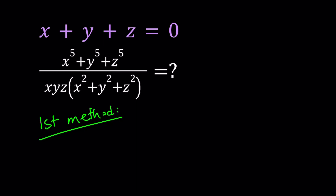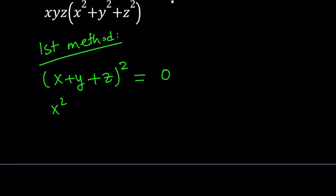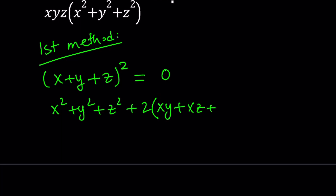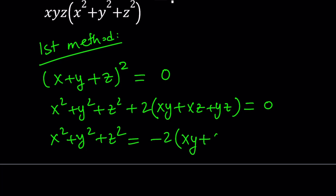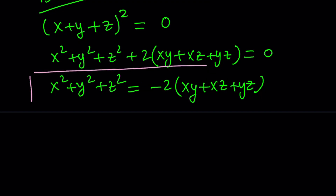We are given that x plus y plus z is equal to 0, and we have the sum of 5th powers, the sum of squares, and the product. Now, you might be questioning whether we're always going to get a numerical value. Let me tell you that we are going to be getting a numerical value — that's what we're supposed to find. Let's start by squaring x plus y plus z, because that's going to give us something about the sum of squares. Since x plus y plus z equals 0, its square equals 0. So x squared plus y squared plus z squared plus 2 times (xy plus xz plus yz) equals 0. My goal is to isolate the sum of the squares, so let's save that for future use.